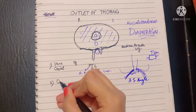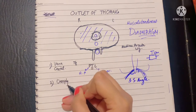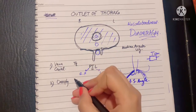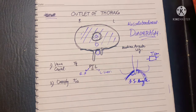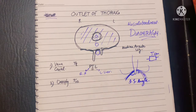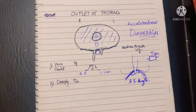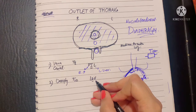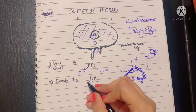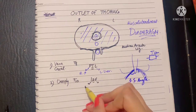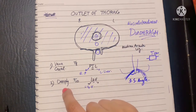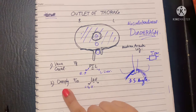The next opening is the esophageal opening. As the name says, it allows passage of the esophagus. This lies at the level of T10 and is elliptical in shape. The structures passing through it can be remembered with the mnemonic LOVE: O for esophagus, V for vagal trunks, and L for left gastric vessels. When there is contraction of the diaphragm, this opening undergoes constriction.